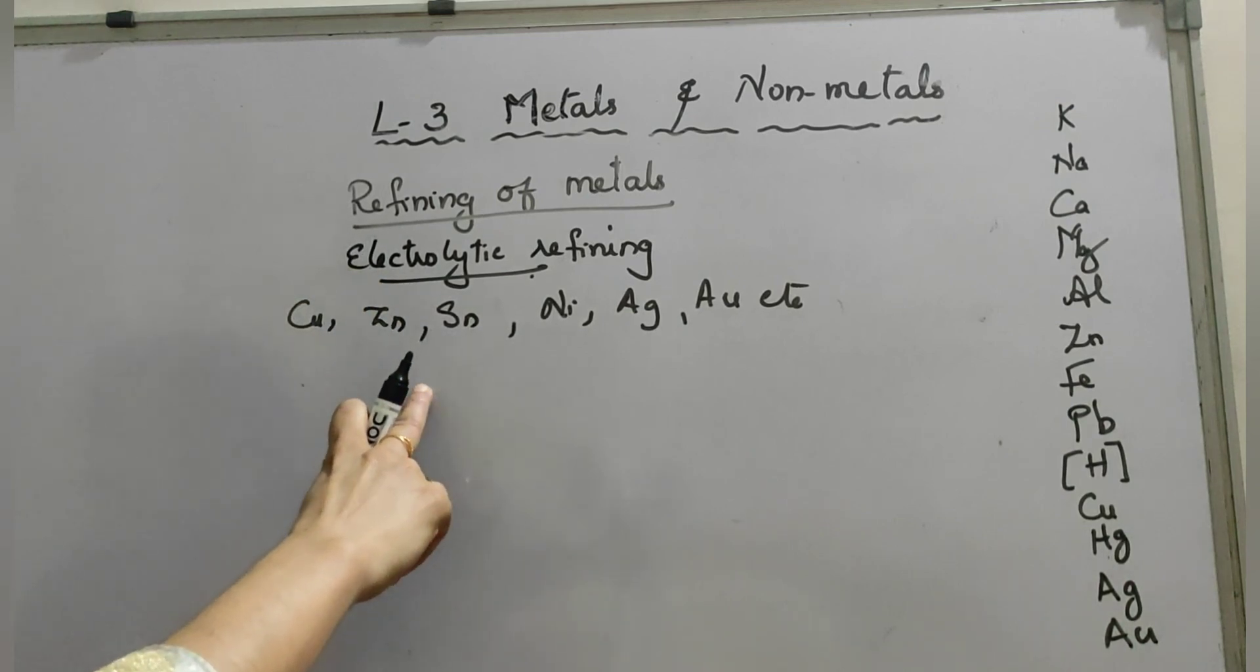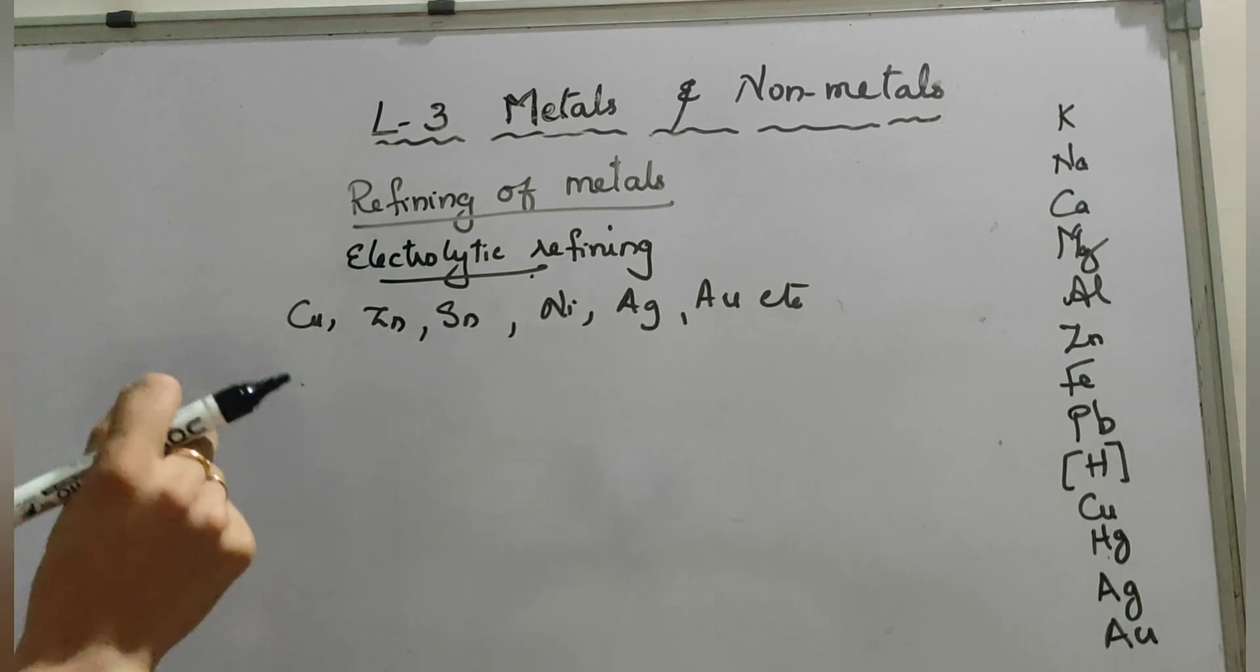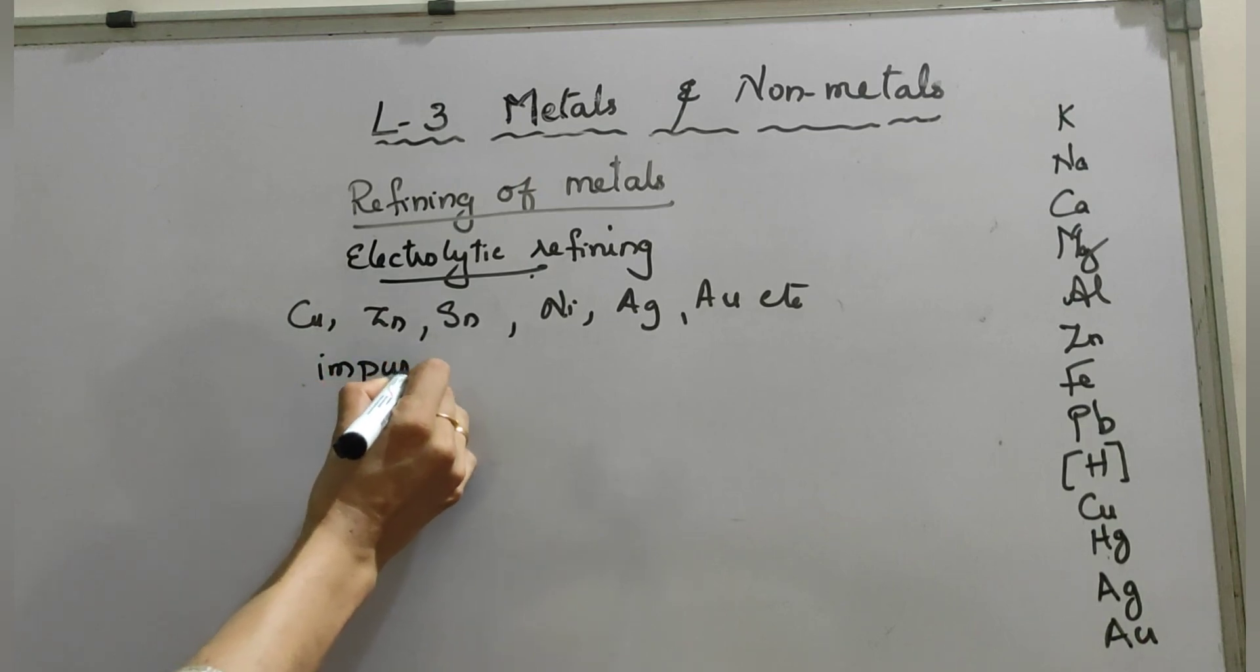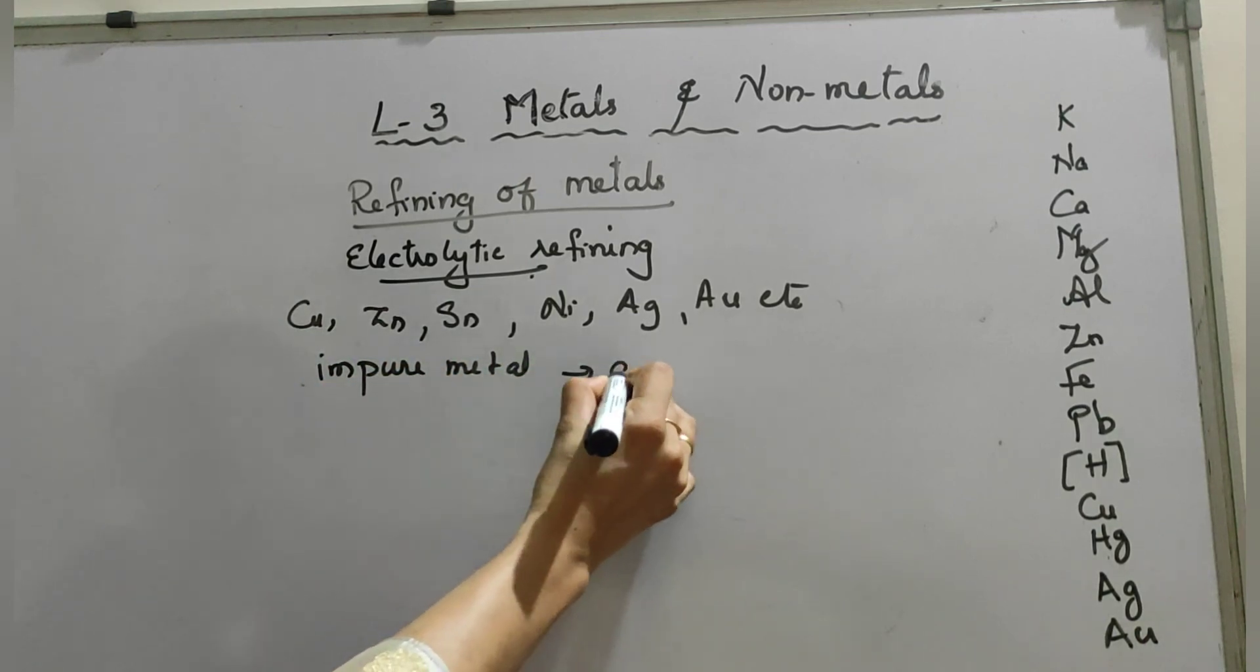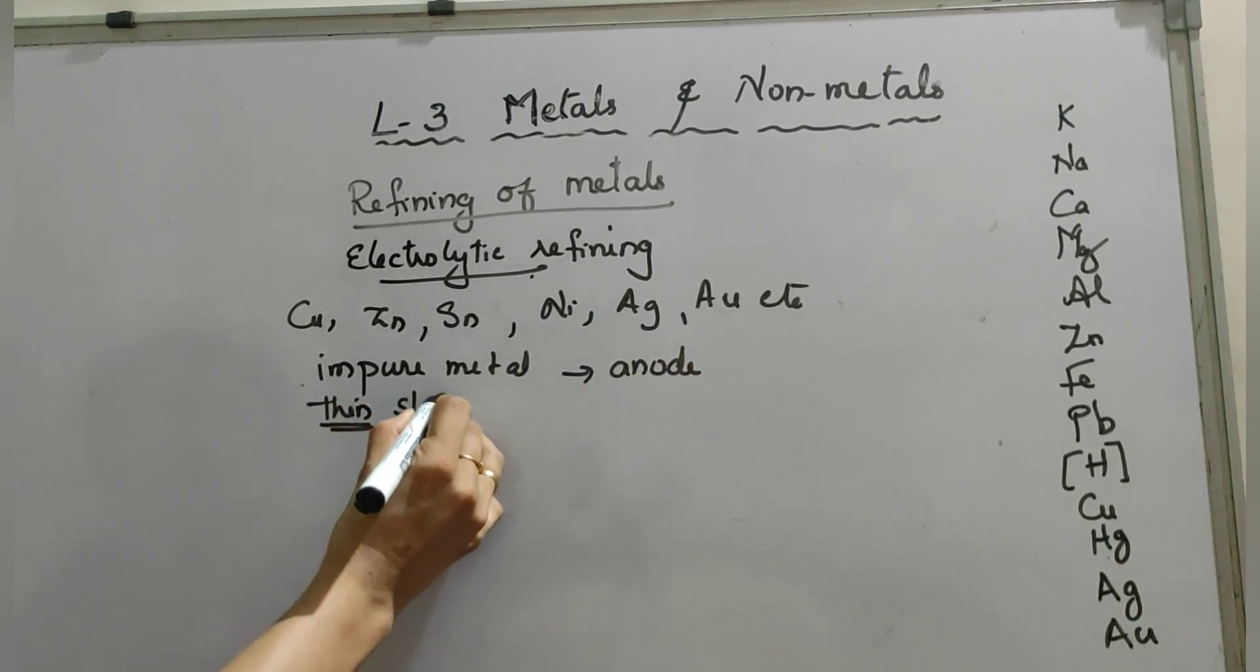The impure metal is made anode and a thin strip of pure metal is made as cathode. So impure metal is made as anode, and another important thing: this thin strip of pure metal is made as cathode.